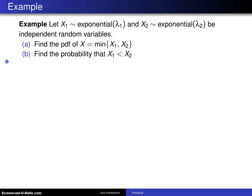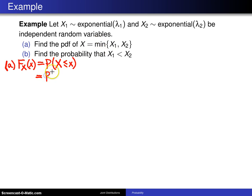For part A, I'm going to use the CDF technique. We want the CDF of the random variable X, which is this minimum. By definition, that is the probability that the random variable X is less than or equal to little x. You can replace capital X by the minimum, so this is the probability that the minimum of X1 and X2 is less than or equal to little x.